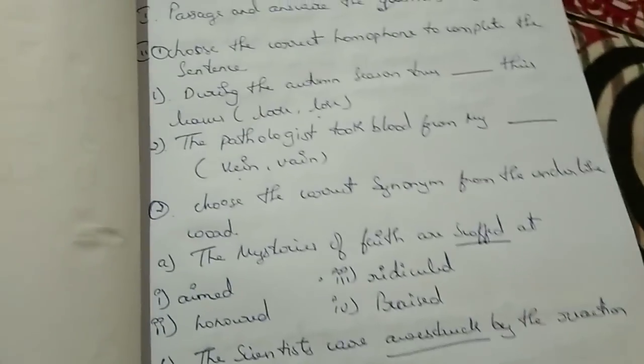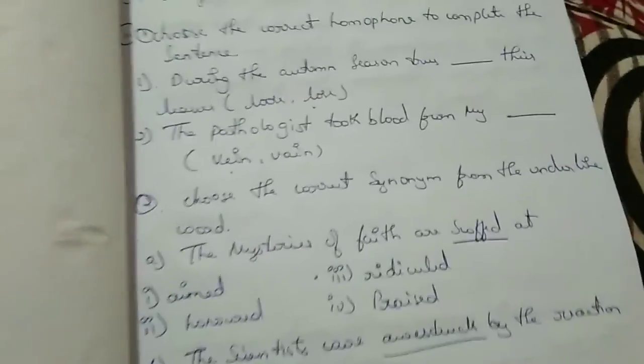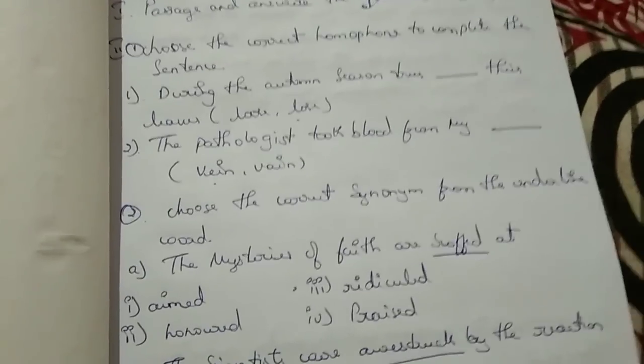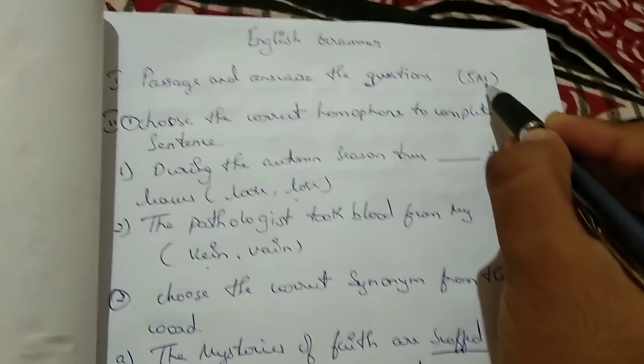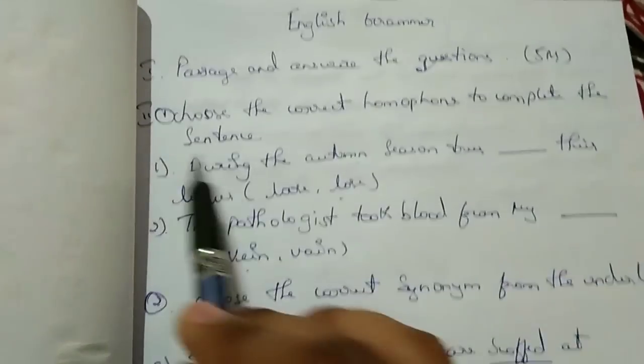Here we have a passage and we have to answer the question. They will give a passage — you're writing it from fourth standard. Write point to point; don't write three or four lines unless the answer is big. Don't write your own stories in passage writing — they will scratch your paper. So for these five marks, let's move on.